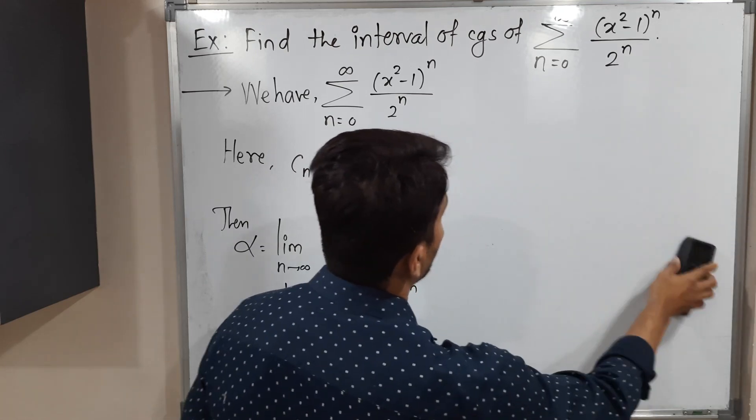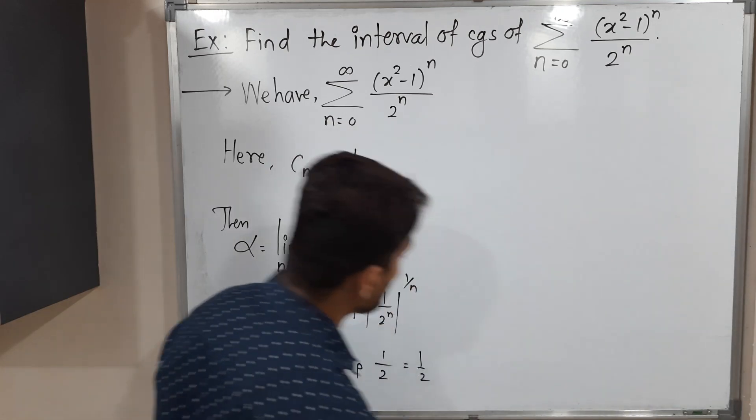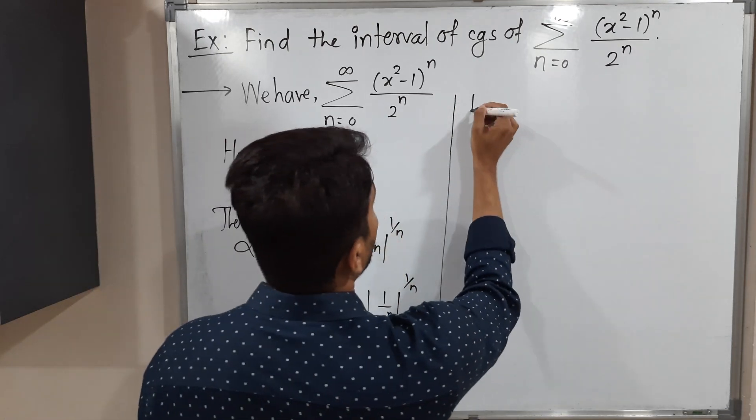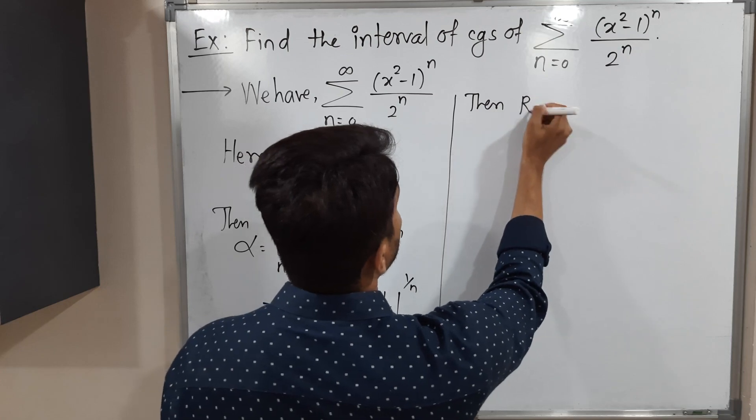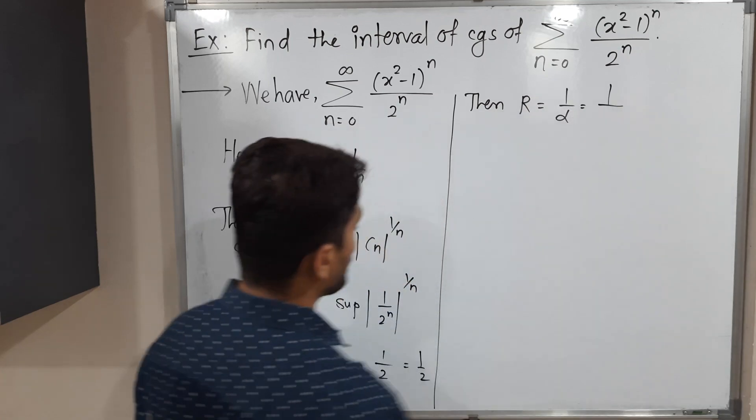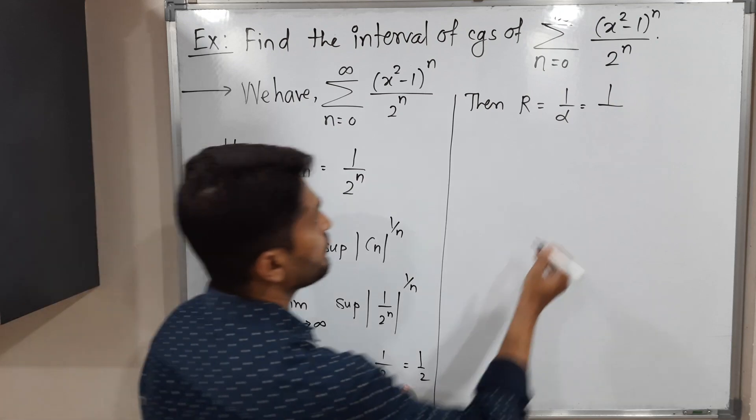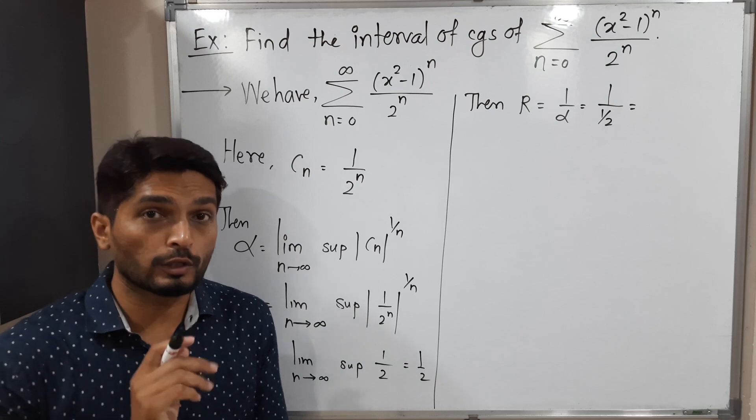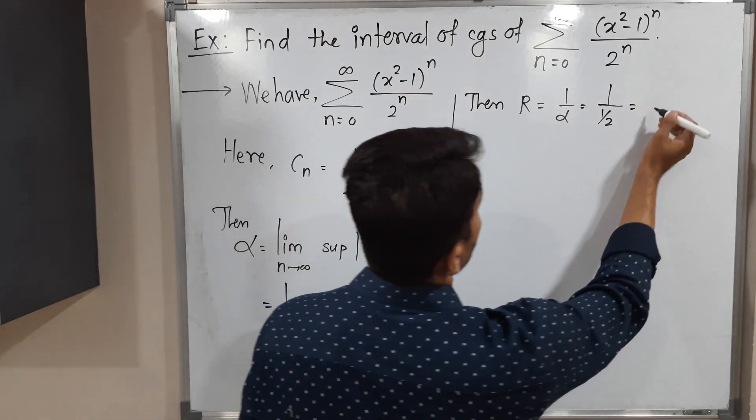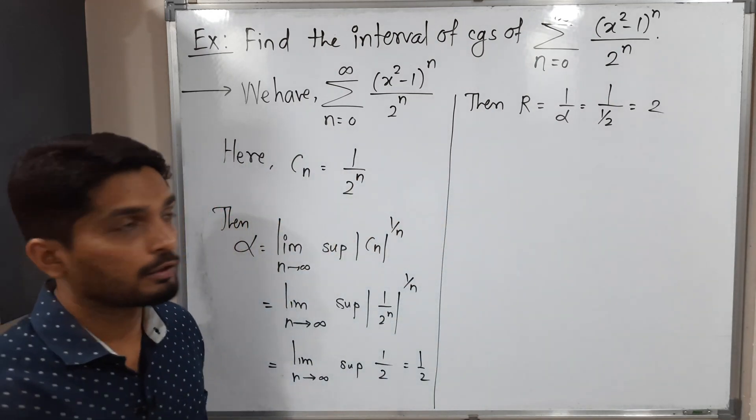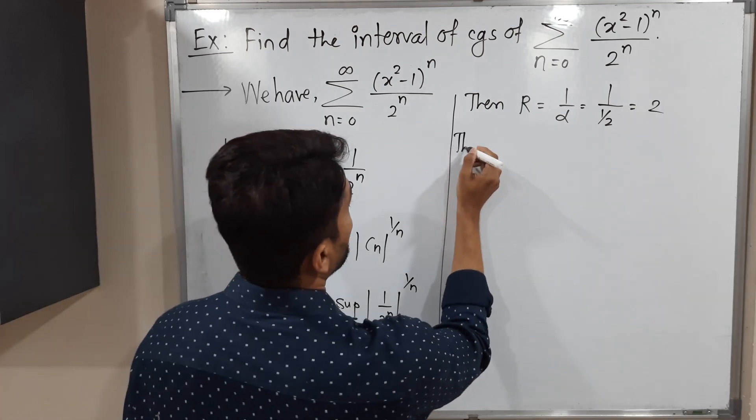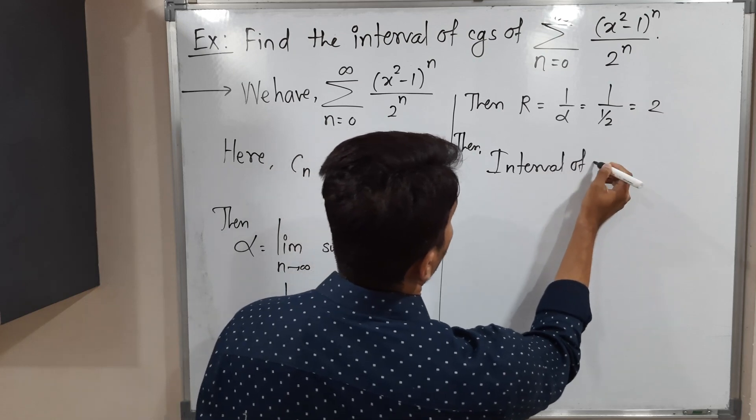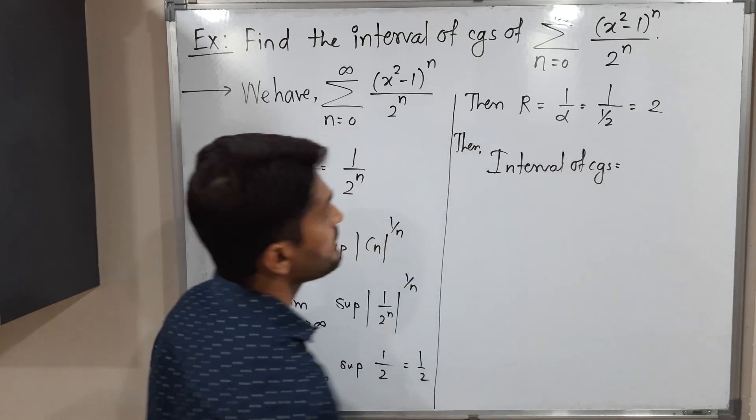Radius of convergence is the reciprocal of α, so I am putting the value of α which is 1/2. Now this 2 is in the denominator of the denominator, so it will go to the numerator. The radius of convergence is 2. So let us find the interval of convergence.